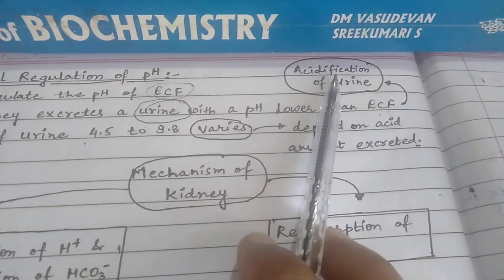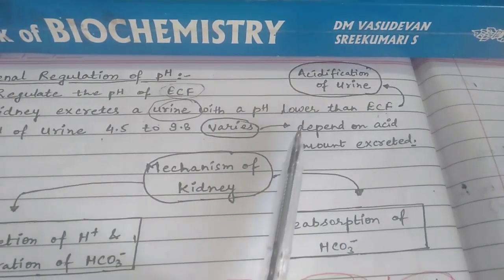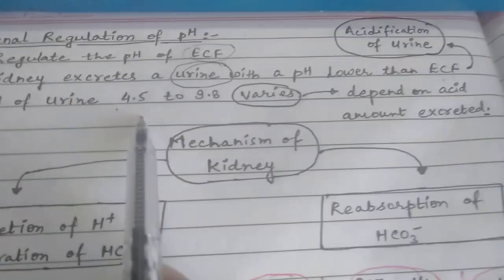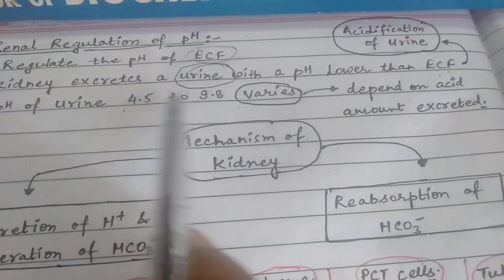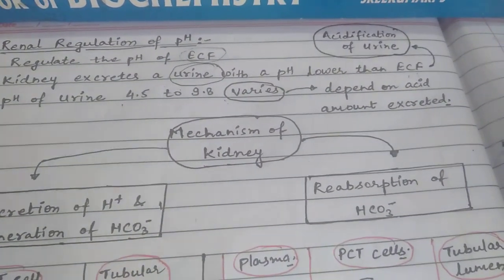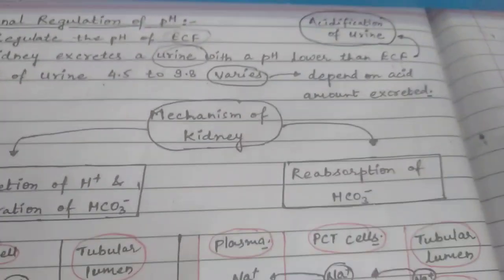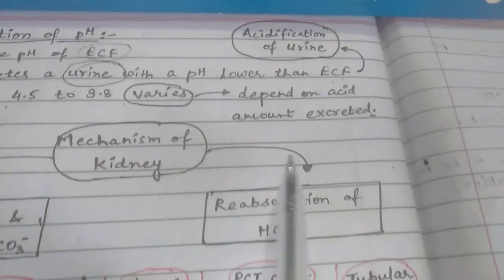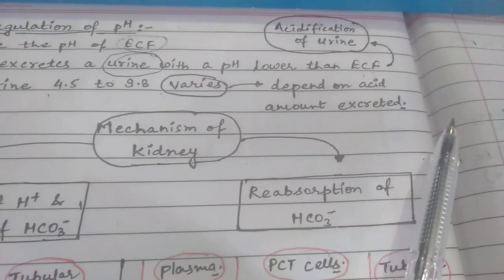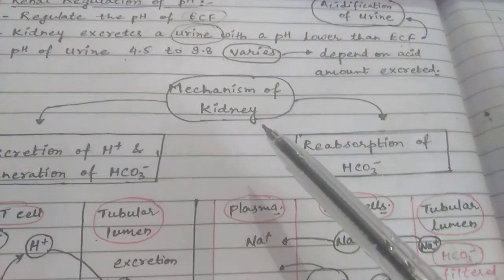This condition is known as the acidification of urine. The pH of urine always varies from 4.5 to 9.8, and this variation in urine pH depends upon the amount of acid excreted into the urine.